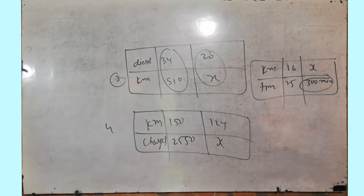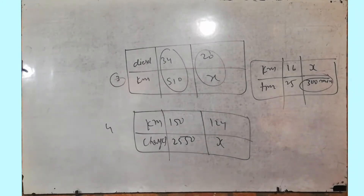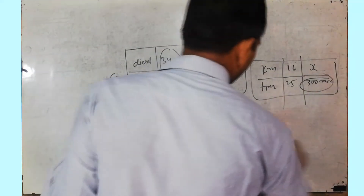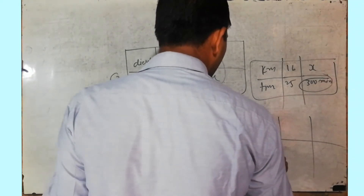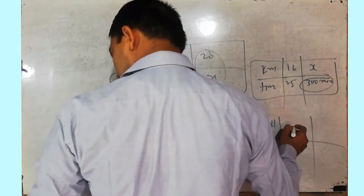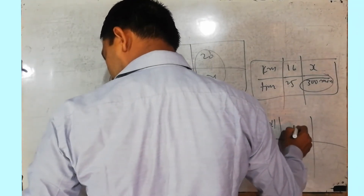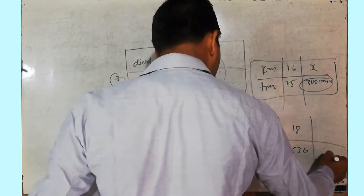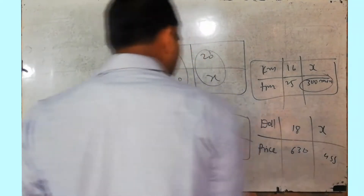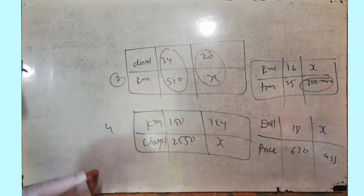Question number 6: if 18 dolls cost 630 rupees, how many dolls can be bought for 455 rupees? Simple direct proportion — make a table with dolls and price. 18 dolls cost 630 rupees; for 455 rupees, find X dolls. All these are very easy questions, you will be able to do them.